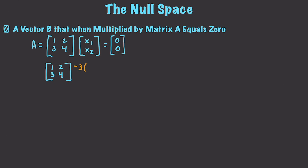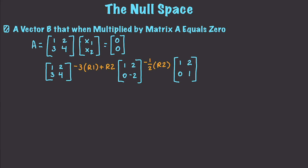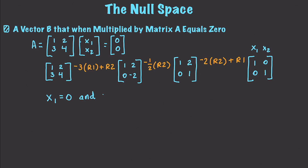I'm going to take negative 3 times R1 plus R2, and this is going to leave me with 1, 2, 0, negative 2. Then I'm going to take negative one half times R2, and that's going to leave me with 1, 2, 0, 1. After that I can take negative 2 times R2 plus R1, and that gives me reduced row echelon form. In that situation, x1 = 0 and x2 = 0. So the basis for the null space in this situation would only be [0, 0]. This means the vectors are linearly independent.